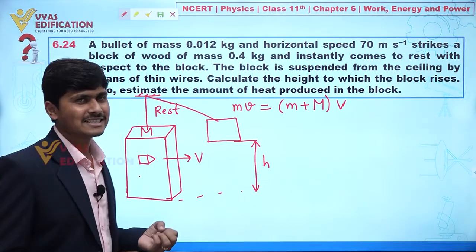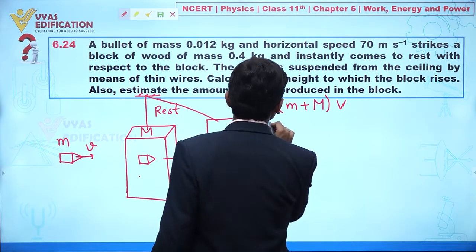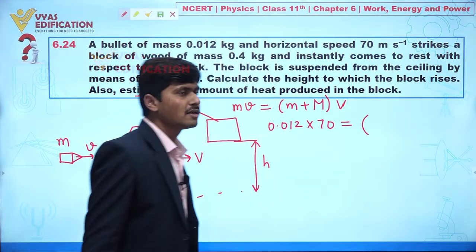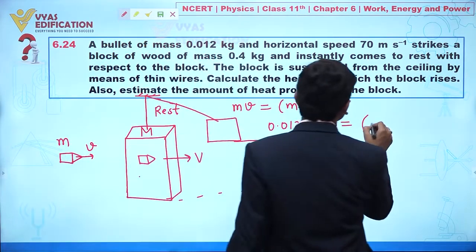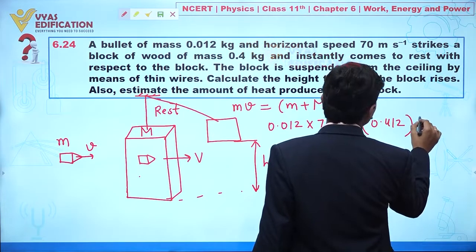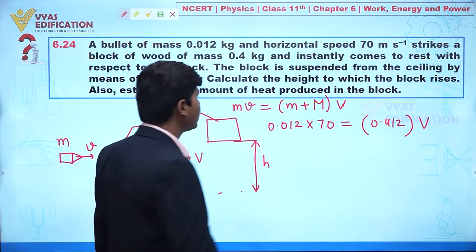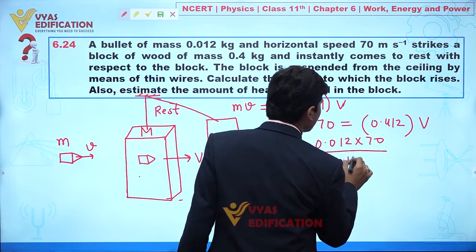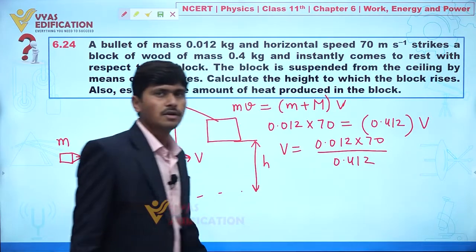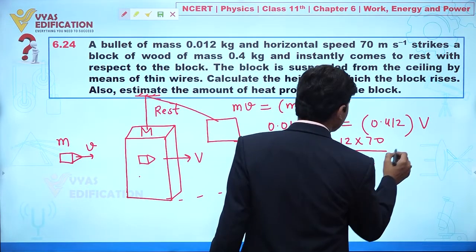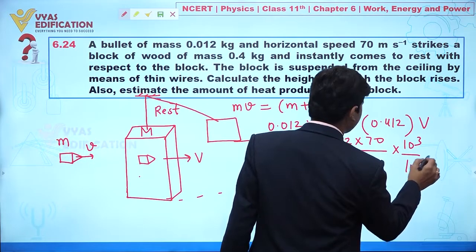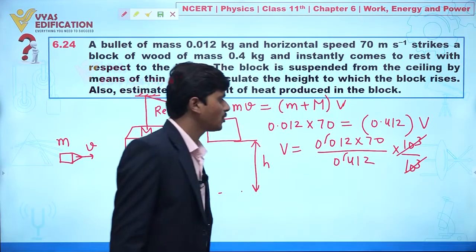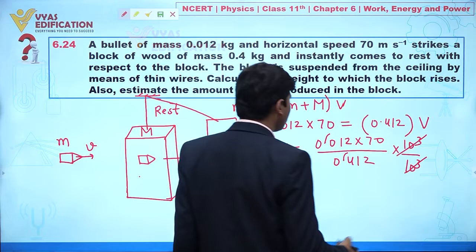Applying momentum conservation: m·v = (m + M)·v′. With m = 0.012, v = 70, and M = 0.4, total mass is 0.412. So v′ = (0.012 × 70) / 0.412. Simplifying by cancelling factors of 10³, we get 12 / 0.412.